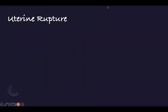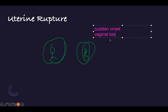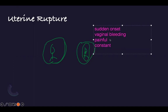Finally, uterine rupture. This is the uterus — normal uterus with the baby inside. In rupture, the uterus is open and you can see the baby through the uterine wall. The scenario is: mommy is contracting and all of a sudden there is sudden onset of painful vaginal bleeding. The pain doesn't go away — it is constant pain that doesn't go away.